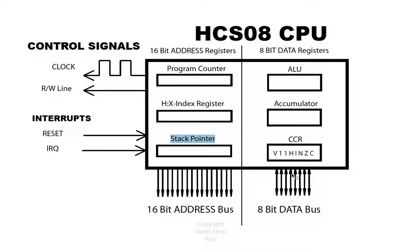The address bus is one direction — out. The data bus is bi-directional: sometimes information is going to come in, sometimes information is going to go out, and the thing that controls that is the read-write line. If you're reading, information comes in — think of yourself as the CPU. If you're writing, you're sending stuff out on the data bus. So the read-write line controls the direction of data flow on the bi-directional data bus.